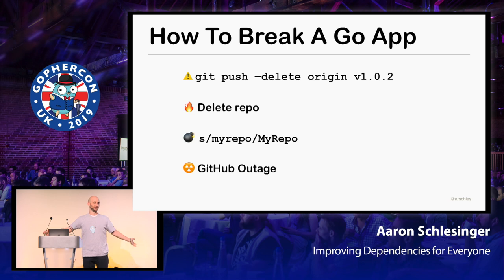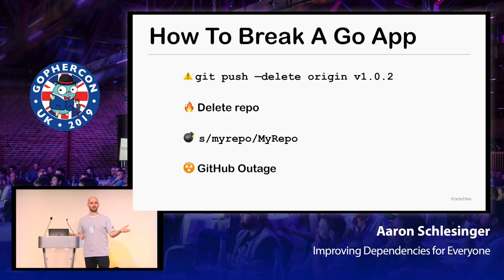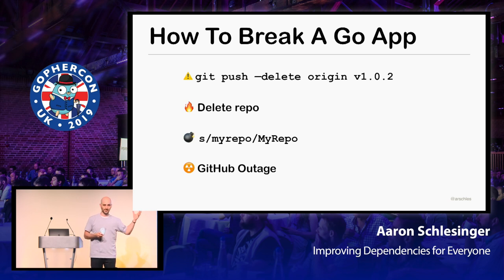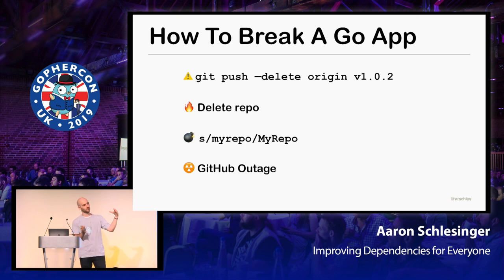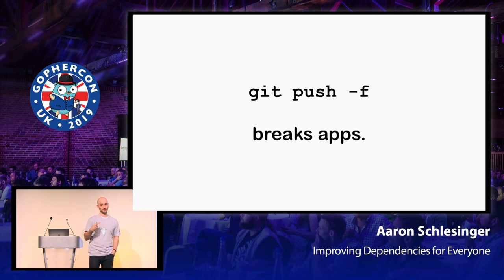And there's stuff that's completely out of your control. You do everything right — you're the best Go citizen, you semver and maintain the 1.0 compatibility promise — and then GitHub goes out for 20 minutes. GitHub is a point of failure for us in the Go ecosystem. If everything relies on a Git clone of github.com/your-package and GitHub goes out, everyone who needs that package during that 20-minute window has no luck. Basically, if folks do a git push -f, you have no guarantees that your build is going to work.